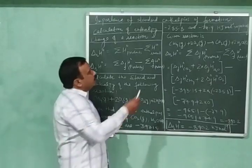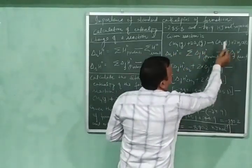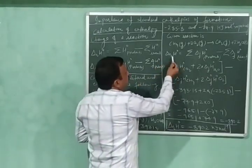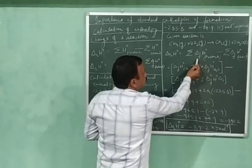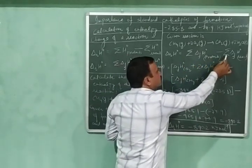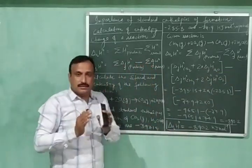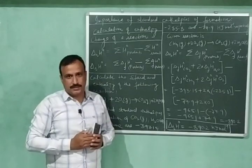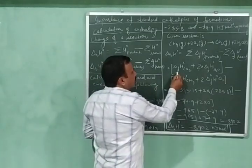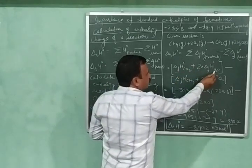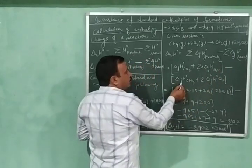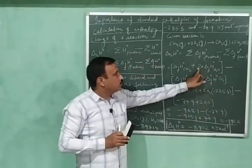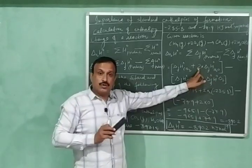Carbon dioxide and water are the products, and methane and oxygen are the reactants. The standard enthalpy change of this reaction equals the sum of standard enthalpies of formation of products minus the sum of standard enthalpies of formation of reactants. So we write: ΔHf°(CO₂) + 2 × ΔHf°(H₂O) minus [ΔHf°(CH₄) + 2 × ΔHf°(O₂)]. The factor of 2 is applied because the standard enthalpy of formation is for one mole, so for two moles we multiply by 2.